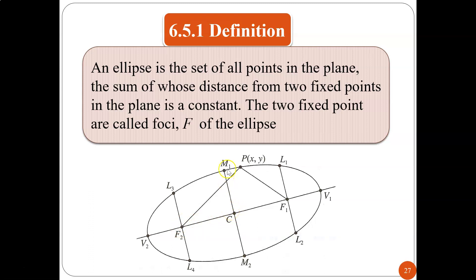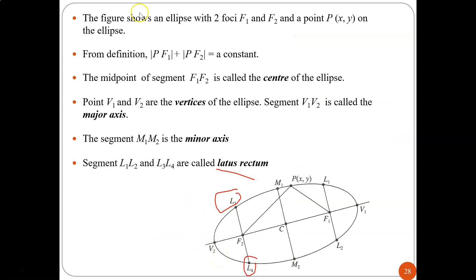You will also have points M1, M2 and L1, L2 and also L3, L4 — we will see what these are later. The figure shows an ellipse with two foci, F1 and F2. And a point P(x,y) on the ellipse. From the definition, PF1 plus PF2 is equal to a constant.